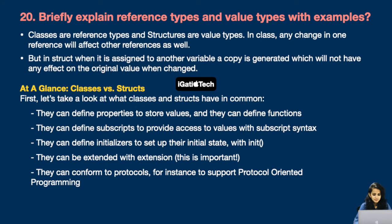Next: Briefly explain reference types and value types with examples. Classes are reference types and structures are value types. In a class, any change in one reference will affect other references as well. But in a struct, when it is assigned to another variable, a copy is generated which will not affect the original value. Looking at what classes and structs have in common: they can define properties, functions, subscripts, and initializers. They can also be extended with extensions and can conform to protocols.